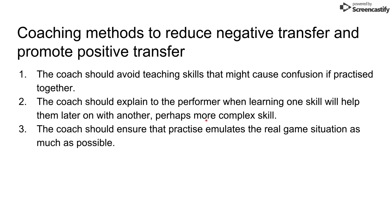The second method is that the coach should always explain to the performer when learning one skill is going to help them later with another, perhaps more complex skill. For example, telling a goalkeeper that practicing catching a football will help them make complex saves later on. This allows the performer to understand they're practicing the basic skill for a good purpose, and it gives them more motivation to keep going rather than wondering why they're doing something so basic.